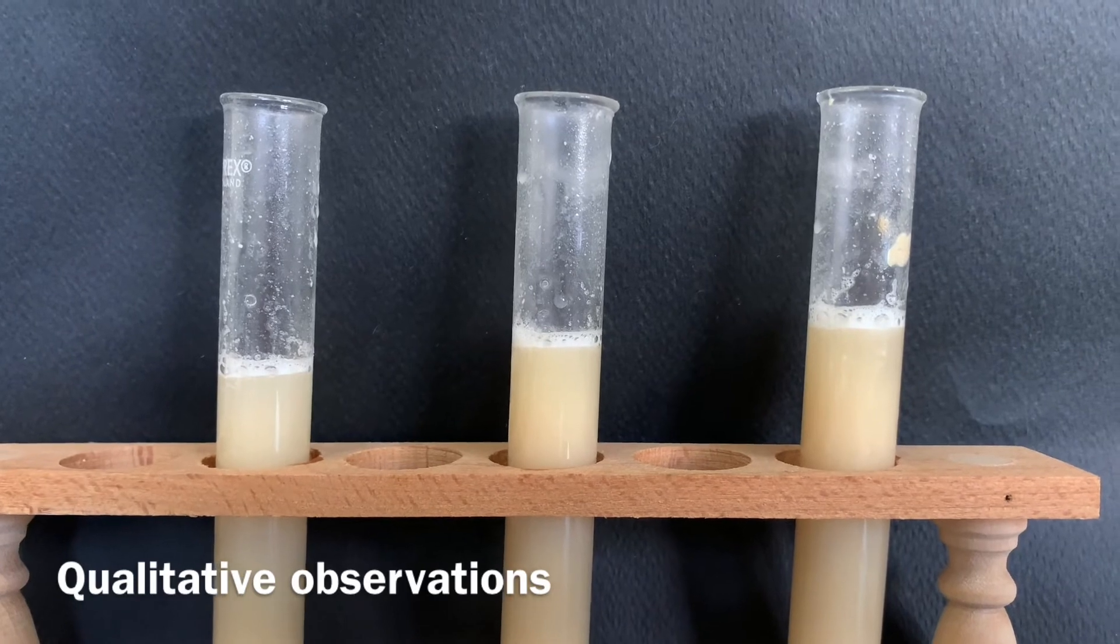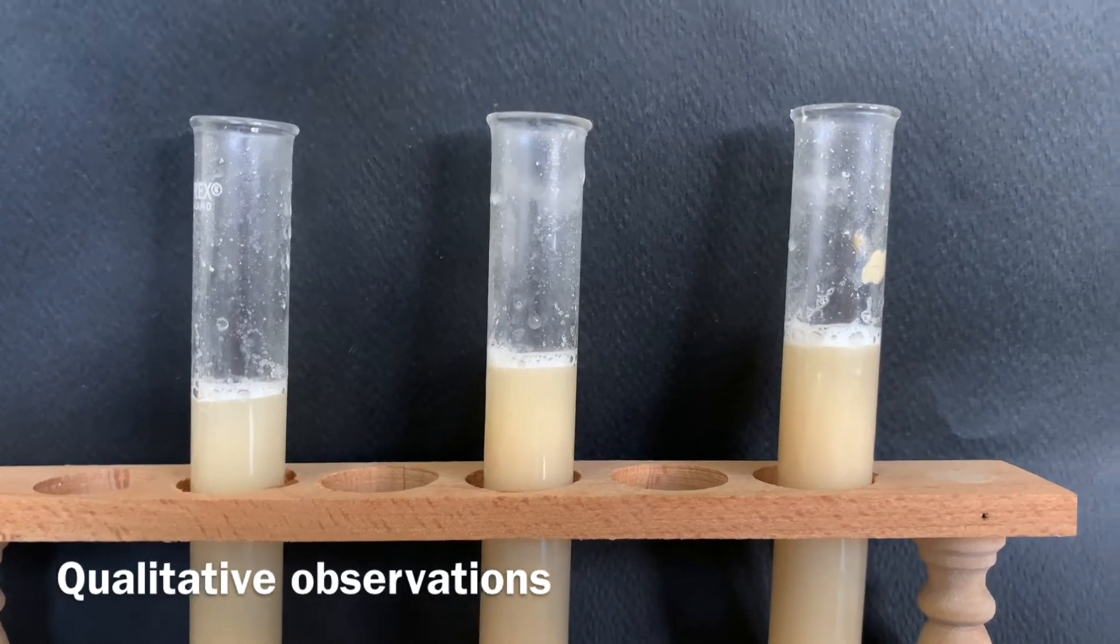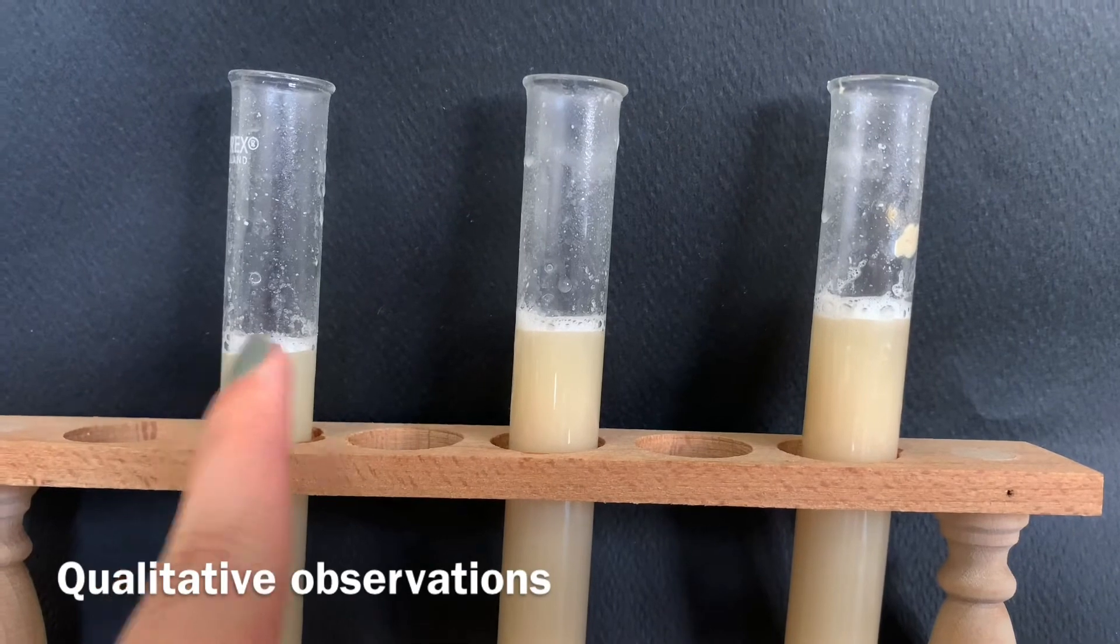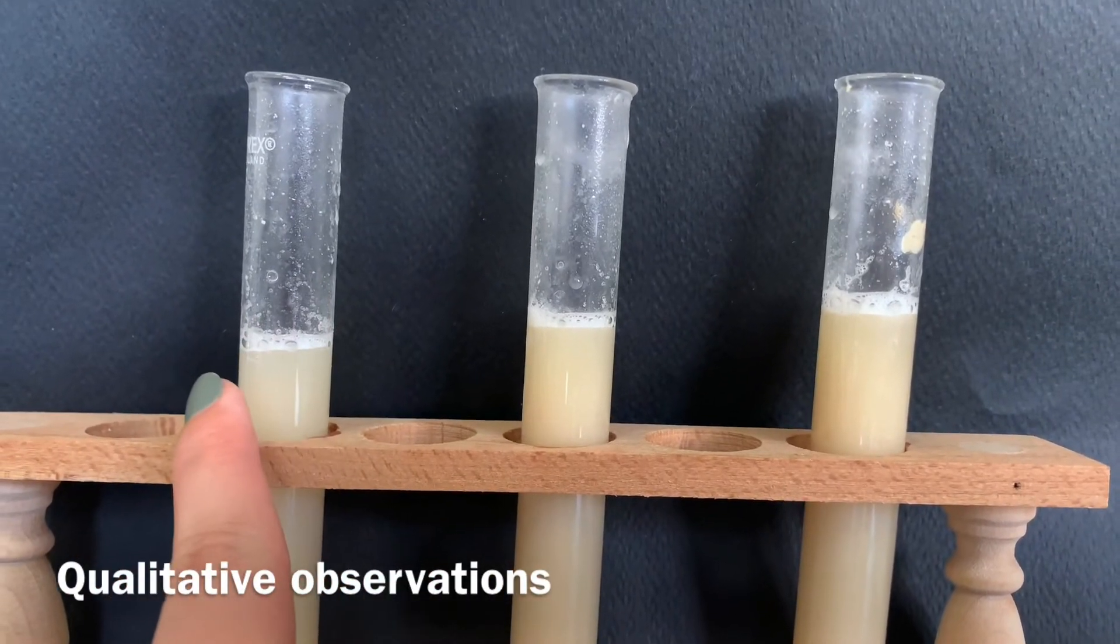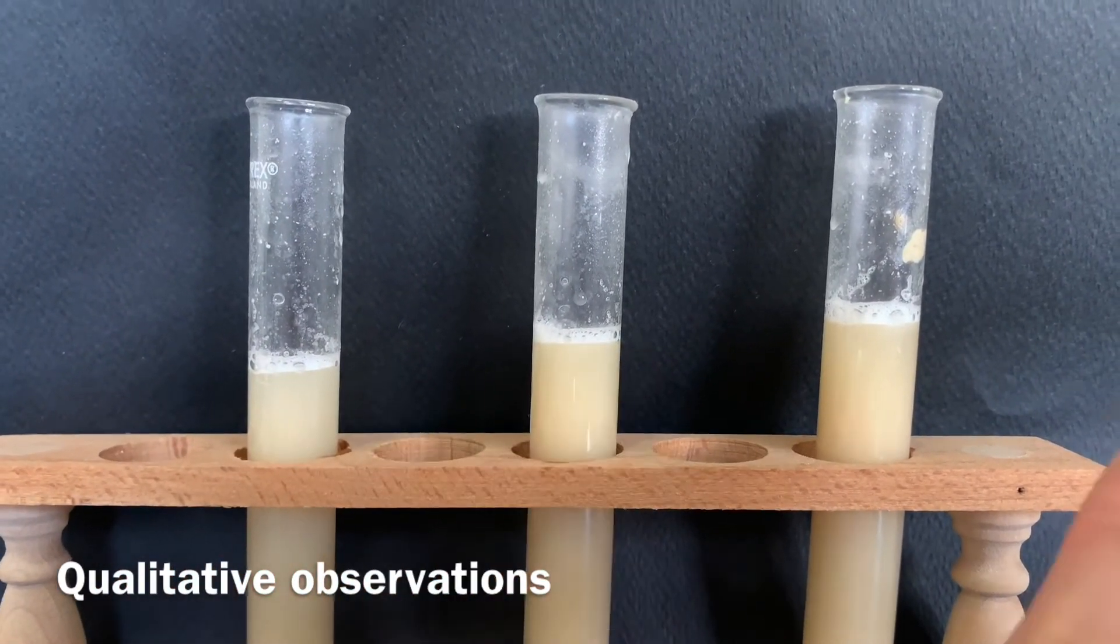Right away, qualitatively we can observe that there's a lot less bubbles produced in the first test tube which had no sugar, compared to the second and third which had one teaspoon and three teaspoons of sugar.